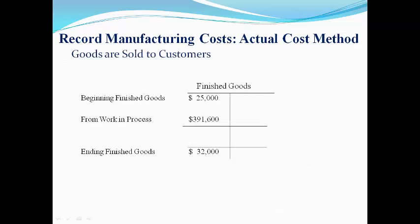The cost of goods completed during the period is moved into the finished goods account with the last entry. This is added to the beginning value to get goods available for sale. The difference between the goods available to sell and the value of finished goods at the end of the period is the cost of goods sold to customers.